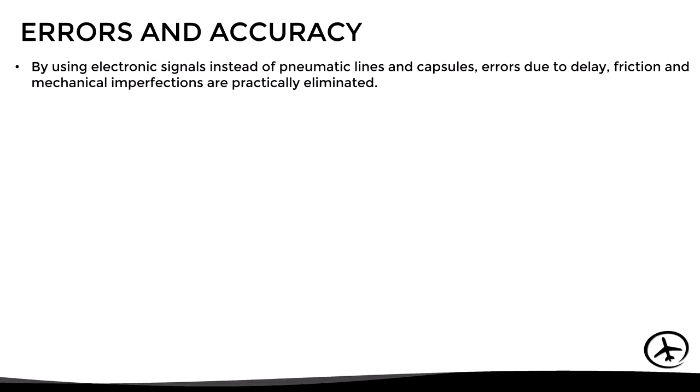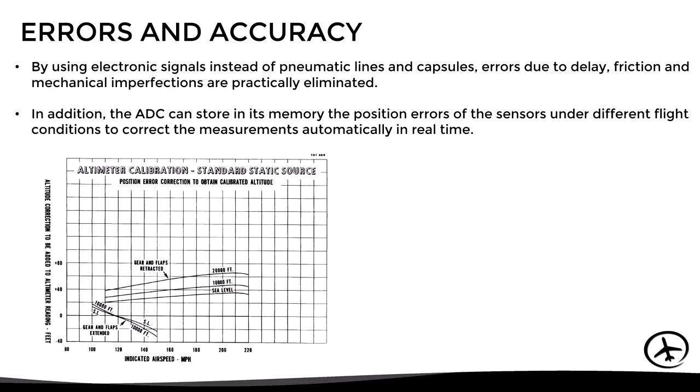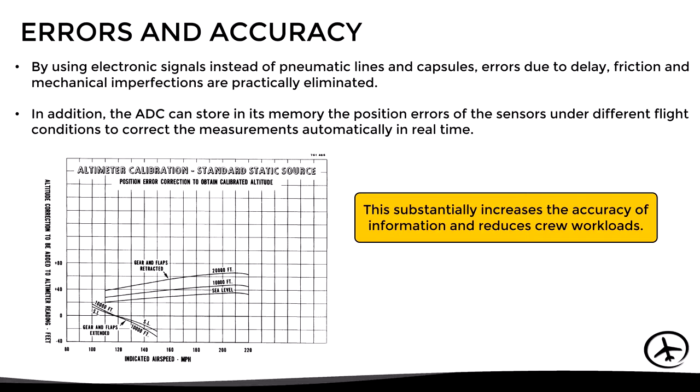After receiving the raw data as electronic signals, the unit integrates and processes the information to calculate the different parameters. A key advantage of the ADC is that it uses electronic signals instead of pneumatic lines and capsules, practically eliminating errors due to delay, friction, and mechanical imperfections. Furthermore, the ADC can store in its memory the position errors of the sensors under different flight conditions, correcting measurements automatically in real time and substantially increasing accuracy while reducing crew workload.